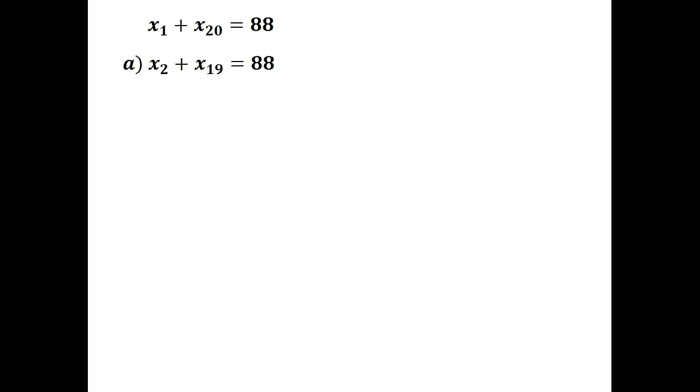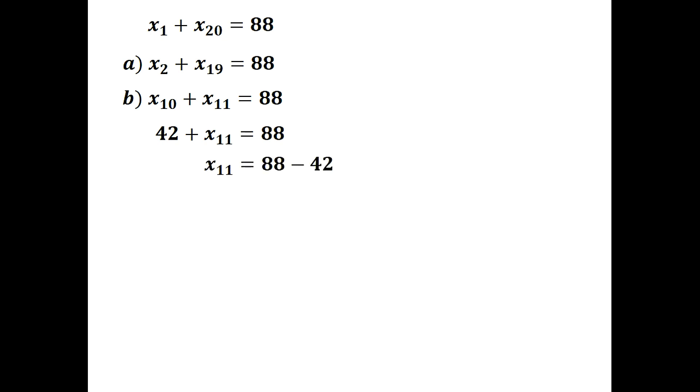For the second part: if the 10th term is 42, what is the 11th term? By the same reasoning, the sum of the 10th and 11th terms is also 88. Since the 10th term is 42, we get 42 plus the 11th term equals 88, so the 11th term equals 88 minus 42, which is 46.